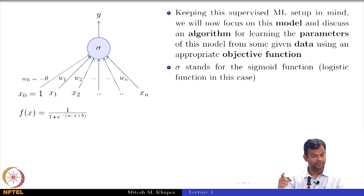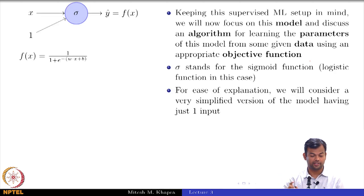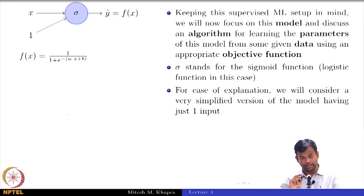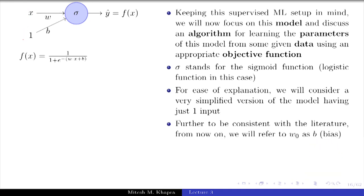Now sigma here stands for the sigmoid function, the logistic function in this case. I am going to simplify this further so that it helps us to do a better analysis. I am just going to consider the case where I have just one input and the bias. And also following the normal terminology in the literature, this w naught from now on I am going to call it b because that is the normal convention, b stands for bias.